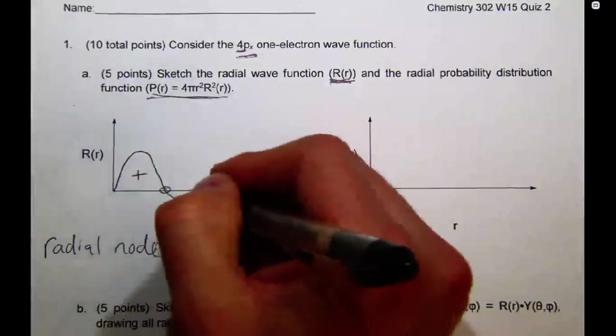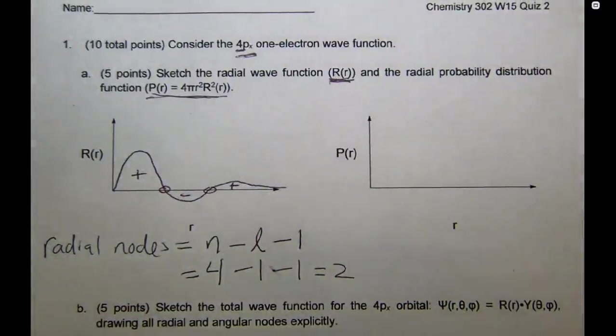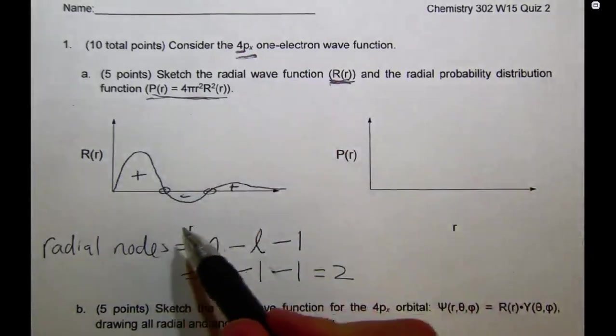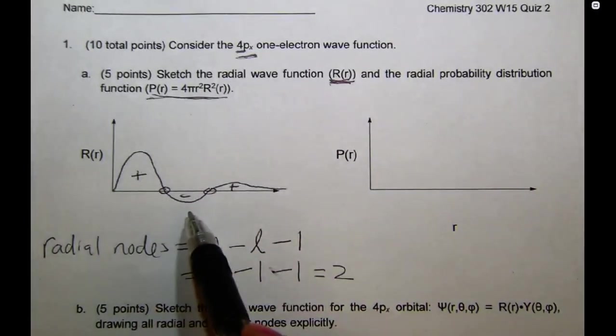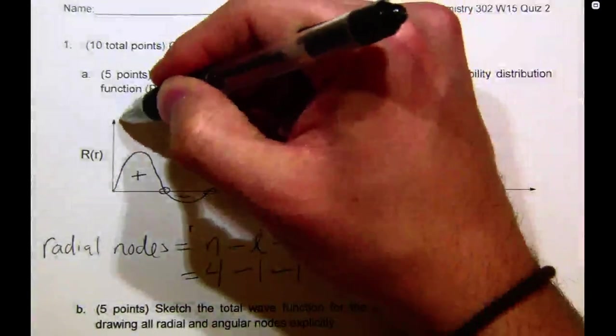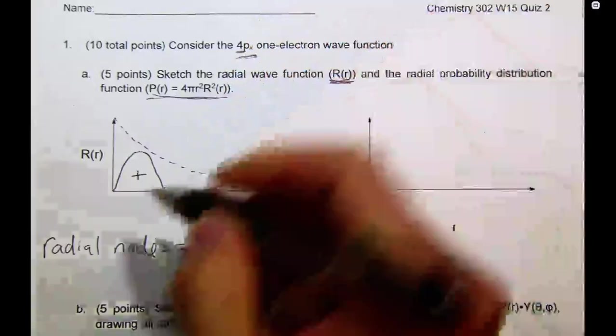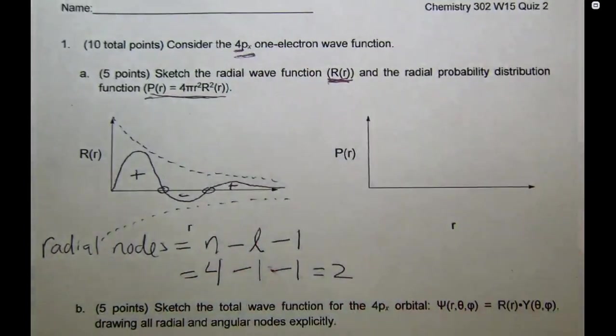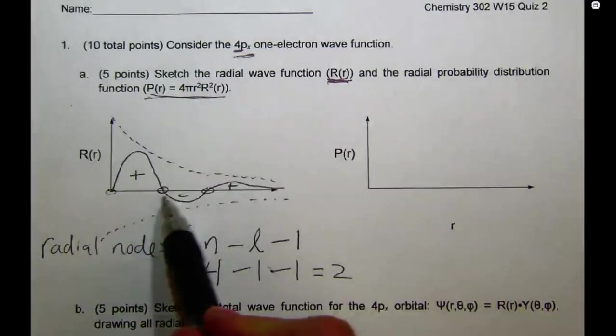We can even draw in plus and minus signs here if we want. One thing that was commonly done incorrectly but that I didn't take off any points for was the asymptotic nature of these maxima. So, if I drew two dotted lines on your quiz, that just means that I want you to realize that these maxima should be decreasing in intensity as you go out to r. So, the first maximum is always the highest, and then this asymptotically decreases, and then below the x-axis we have the same shape reflected. But again, that wasn't worth any points, that's just something for you guys to remember for the future. The important part was that you got this graph beginning at the origin and that we had two radial nodes.